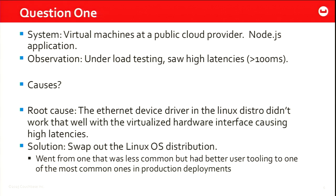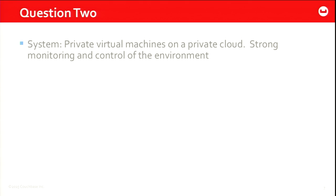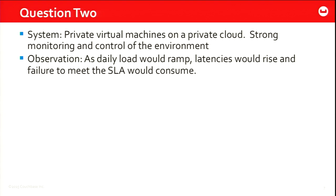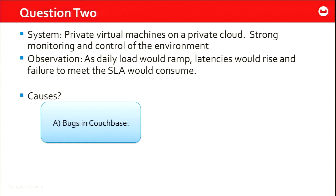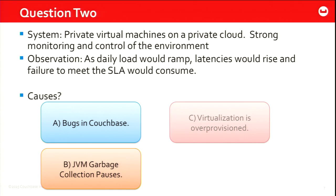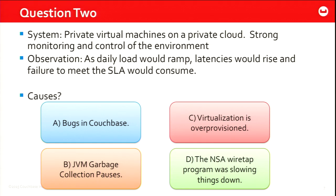Question two: the system is a set of private virtual machines on a private cloud with strong monitoring and control. As daily load would ramp, latencies would go up and they'd start missing their SLA regularly. What are the possible causes? A, bugs in Couchbase; B, JVM garbage collection pauses; C, virtualization is over-provisioned; or D, the NSA wiretap program is slowing things down? The answer is C.